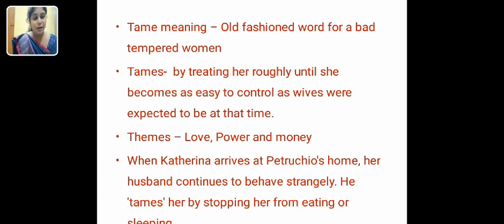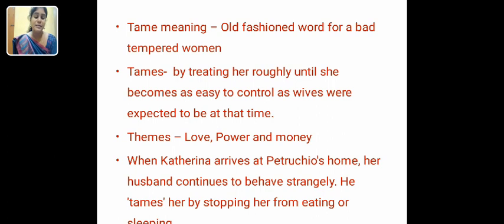The themes of the play are love, power, and money. At the end of the play, when Katherine arrives at Petruchio's home, her husband continues to behave strangely. Once he willingly married her and took her to his home, he treated her in a very peculiar manner — his activities became very peculiar. He put control over everything and tames her by stopping her from eating or sleeping.